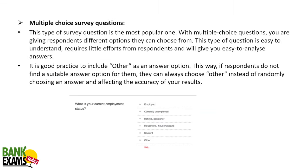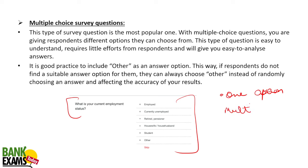Multiple choice questions — as the name suggests, for a question multiple options are there and you can choose the option whichever is suitable. The respondent can choose one option, or the surveyor can let the respondents choose multiple options. How many options the respondent is allowed to choose is up to the researcher who made the survey. This is a kind of close-ended question.